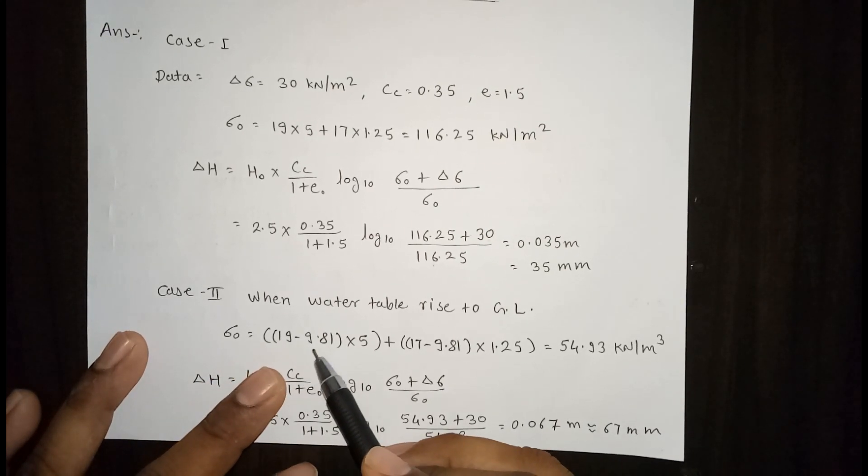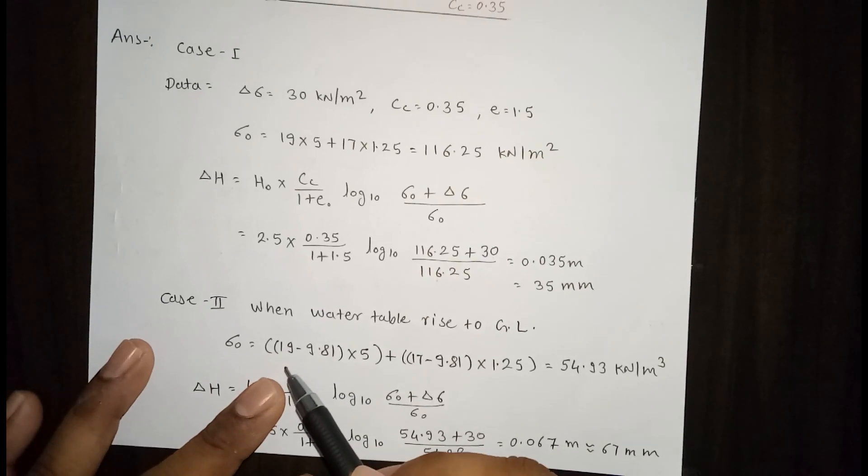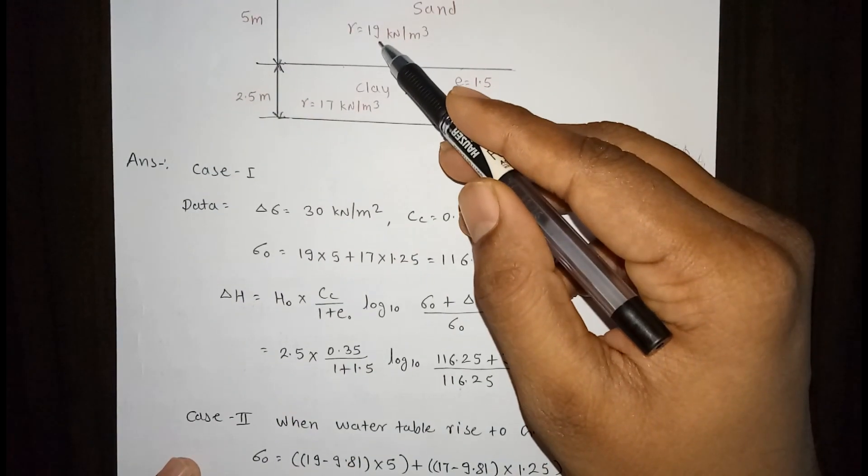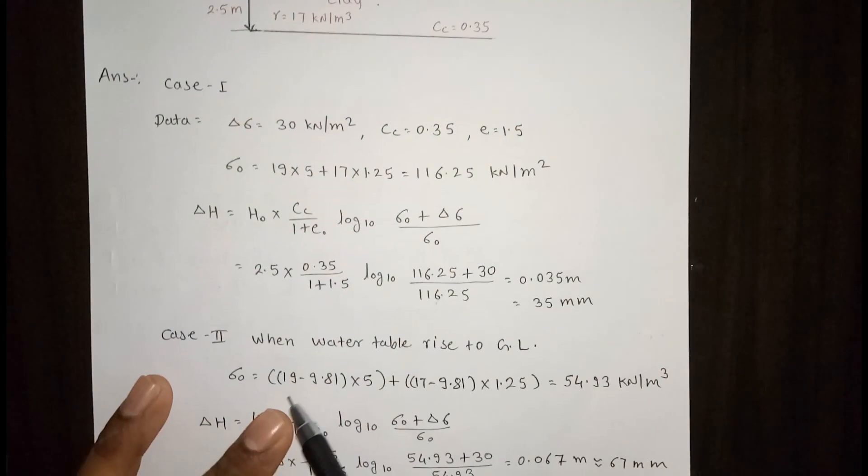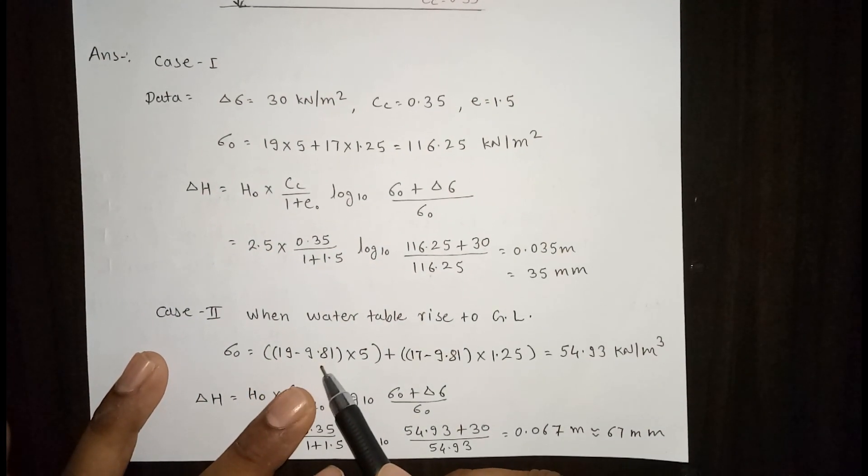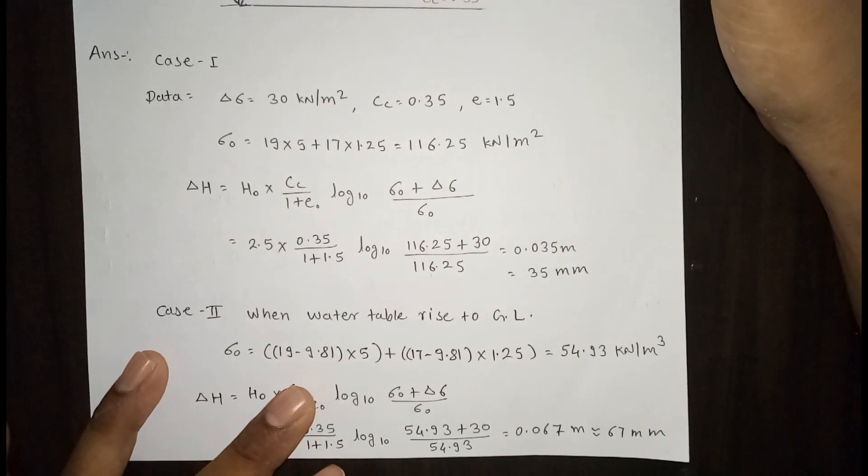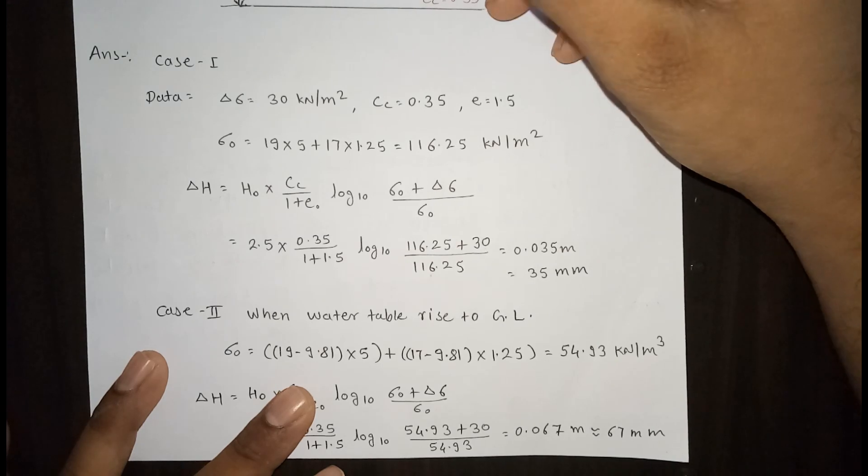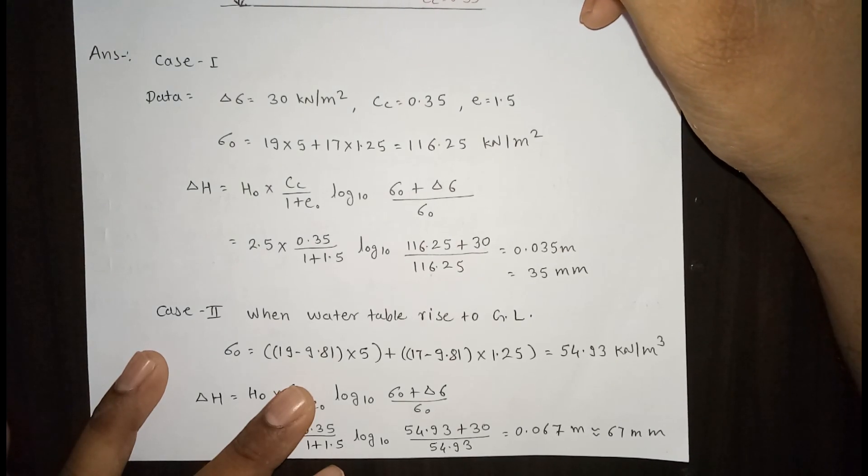Gamma submerged is equal to gamma saturated minus gamma water. We know that. So submerged is 19, so here 19 minus 9.81. Why 9.81? Unit weight of water is 9.81 or 10. Because of the water table rise to the ground level, we have to consider this gamma as gamma submerge. Gamma submerge equals gamma sat minus gamma w, so this gamma is gamma sat.